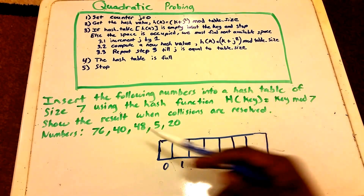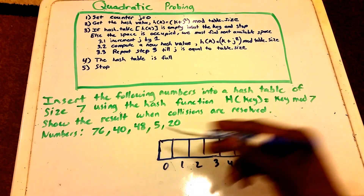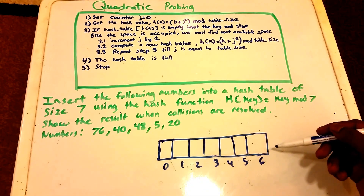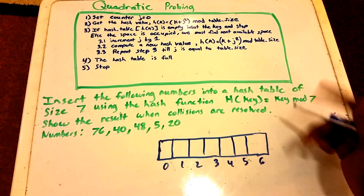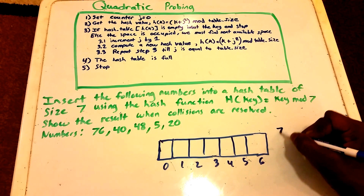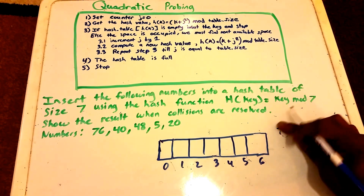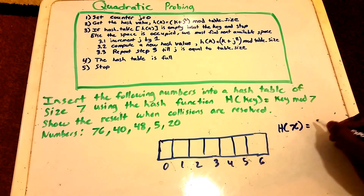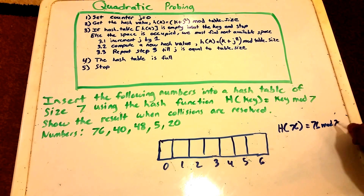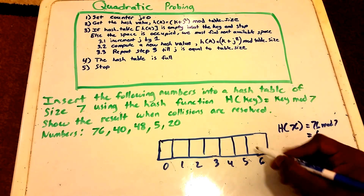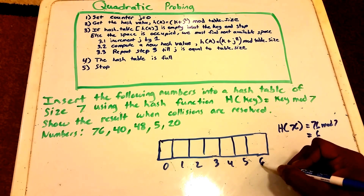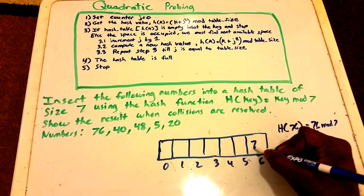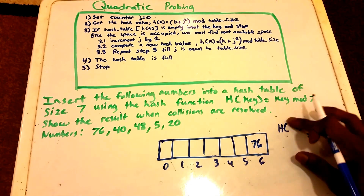To start off, we get the value 76 that we want to insert. Using the hash function: H(76) = 76 mod 7, which gives us the value 6. So at index 6 we insert 76.